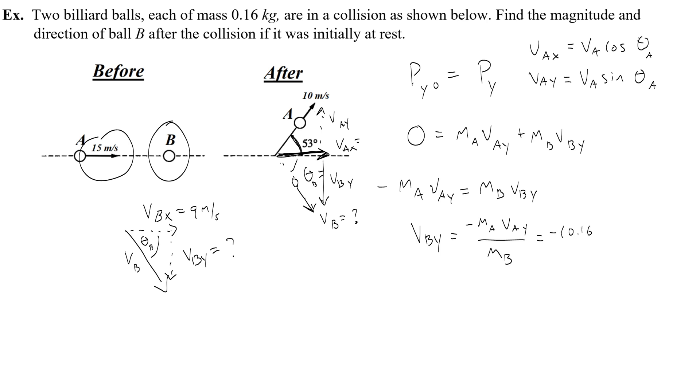This is going to give me negative 0.16 kilograms times vay is 10 meters per second times sine of 53. And then I divide that by the mass of b, 0.16 kilograms. The mass is going to cancel out. So basically just negative 10 sine of 53. And negative 10 sine of 53 is going to give me 7.98 so we can basically just call that 8. Negative 8 meters per second. So I'm going to write that over here. Negative 8 meters per second.